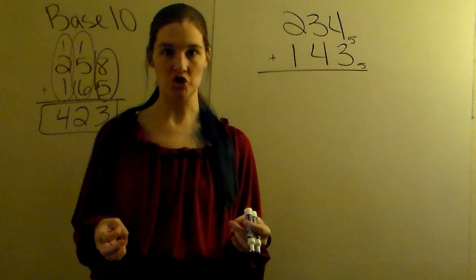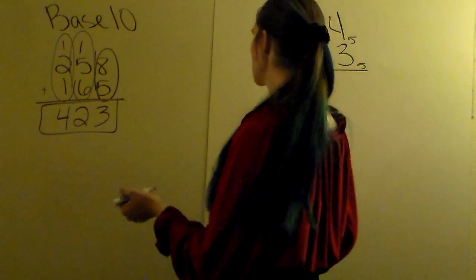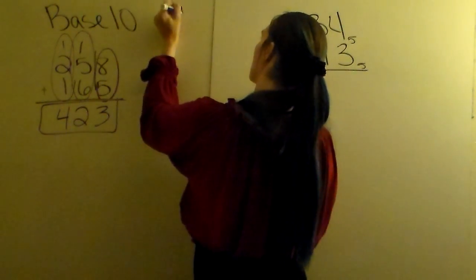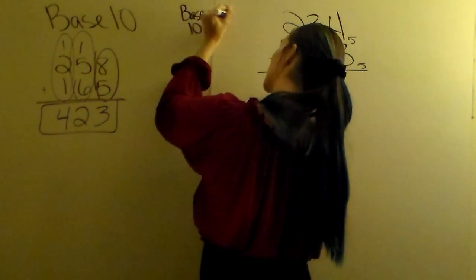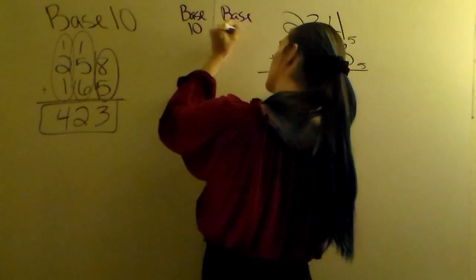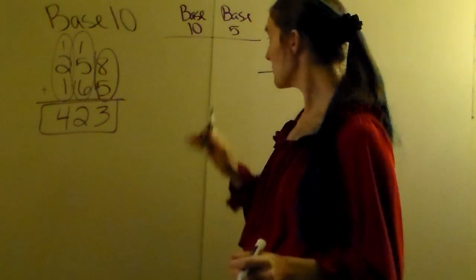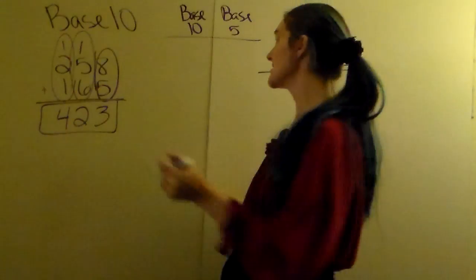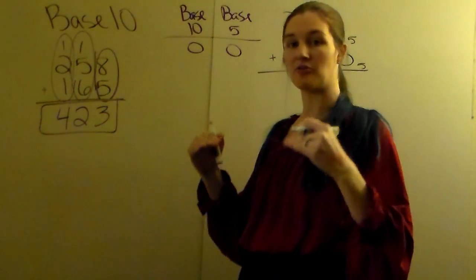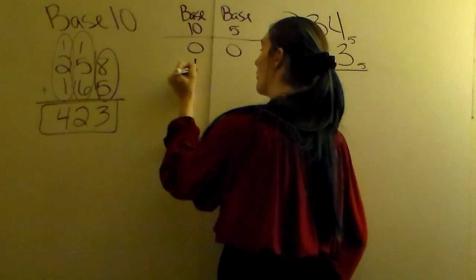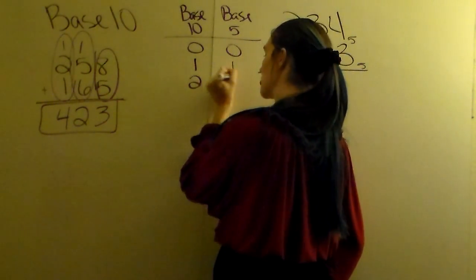So what we're going to make is we're going to make a translation chart. So I'm going to convert from base 10 to base 5. And when you're making this translation chart, you always start at 0 for both. 0 is 0 on both scales, 1 is the same thing, 2 is the same thing.